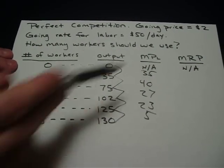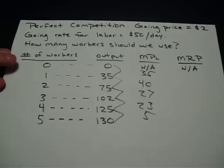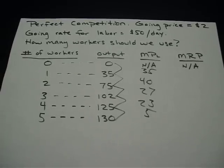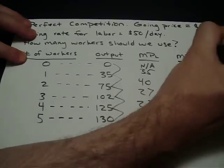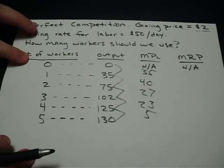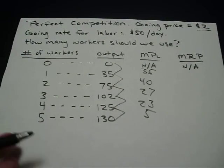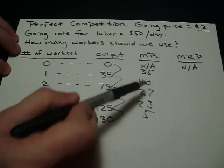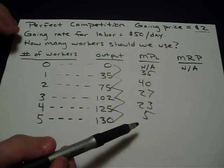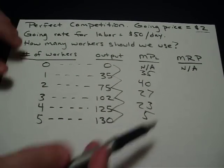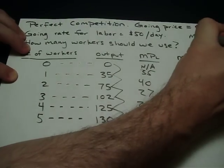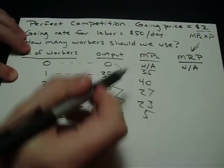The next thing we want to look at is MRP — marginal revenue product. This is what each additional worker provides in terms of dollar value. Since we can sell this product for $2 each and can sell as many as we want in perfect competition, all we do is calculate MPL times the price. That's how we get MRP — it's simply MPL times the price.